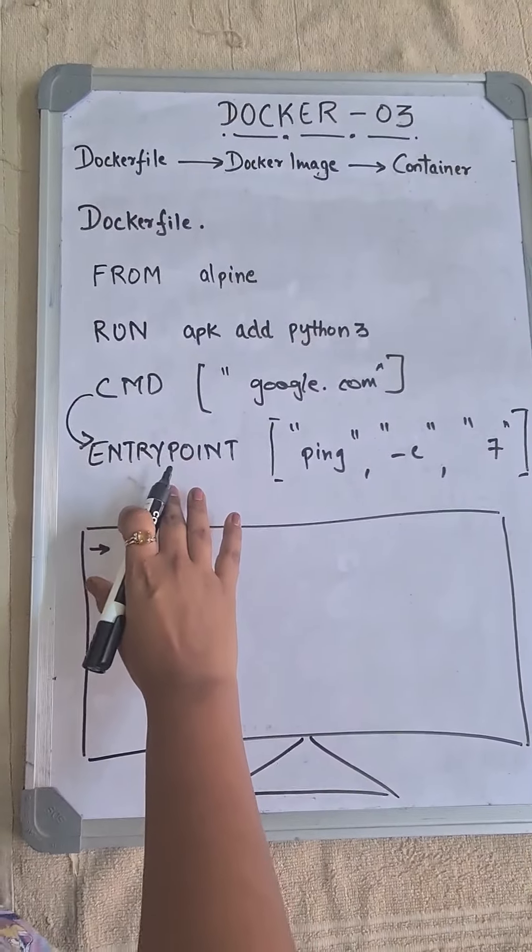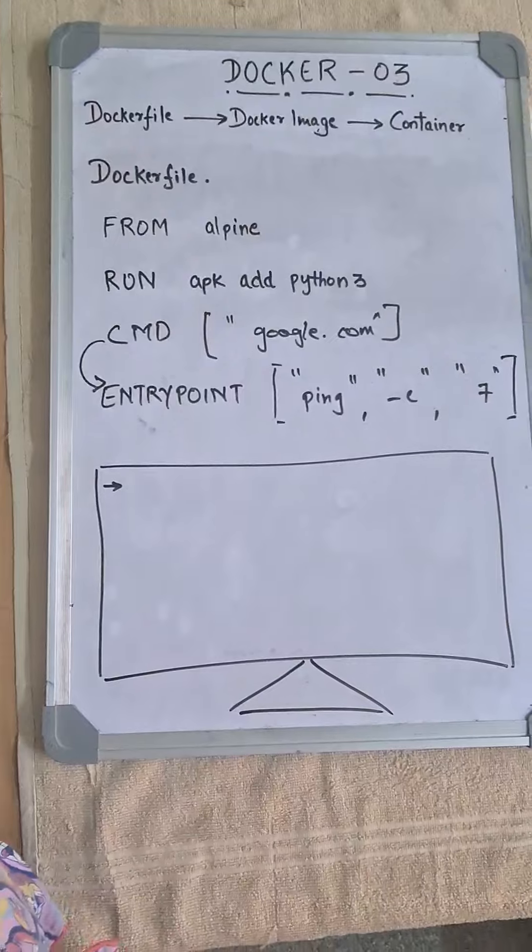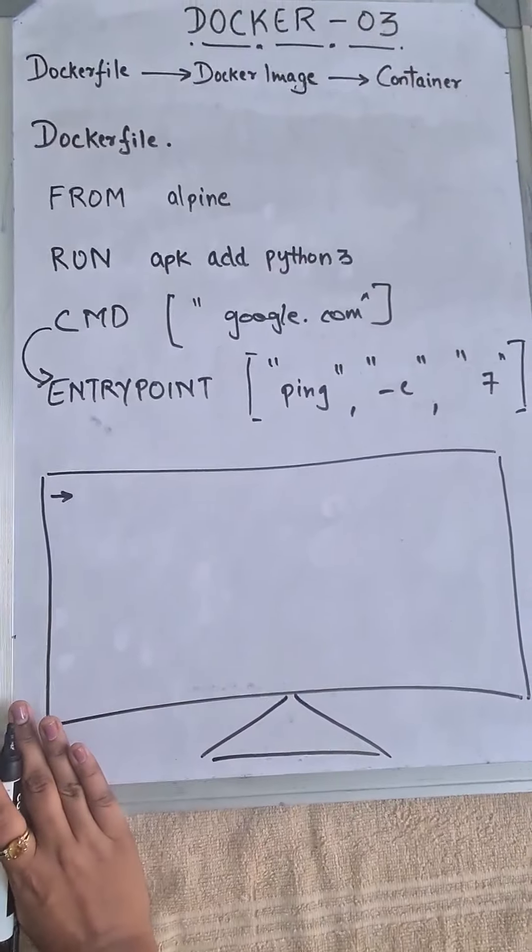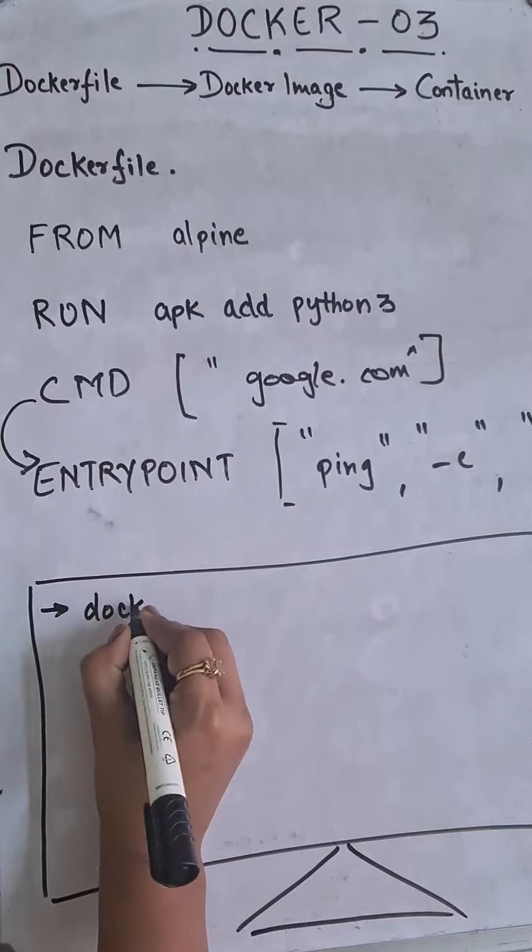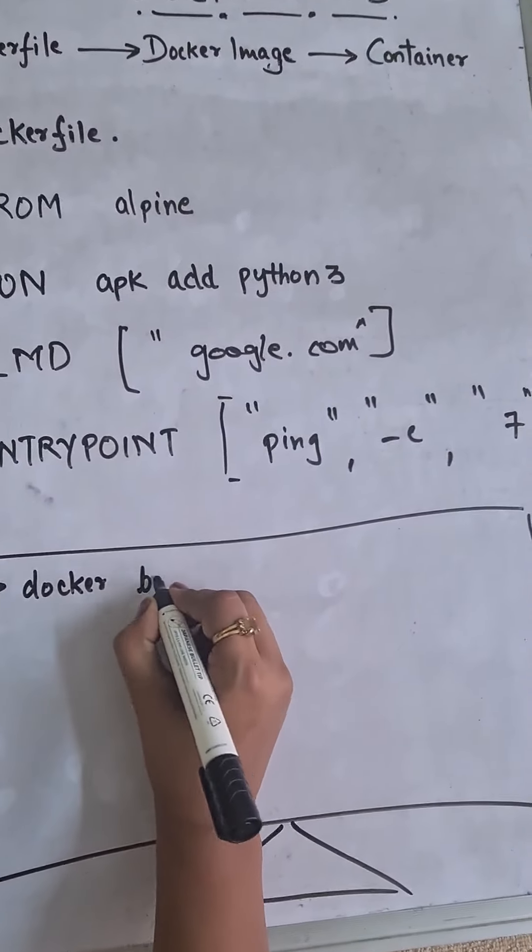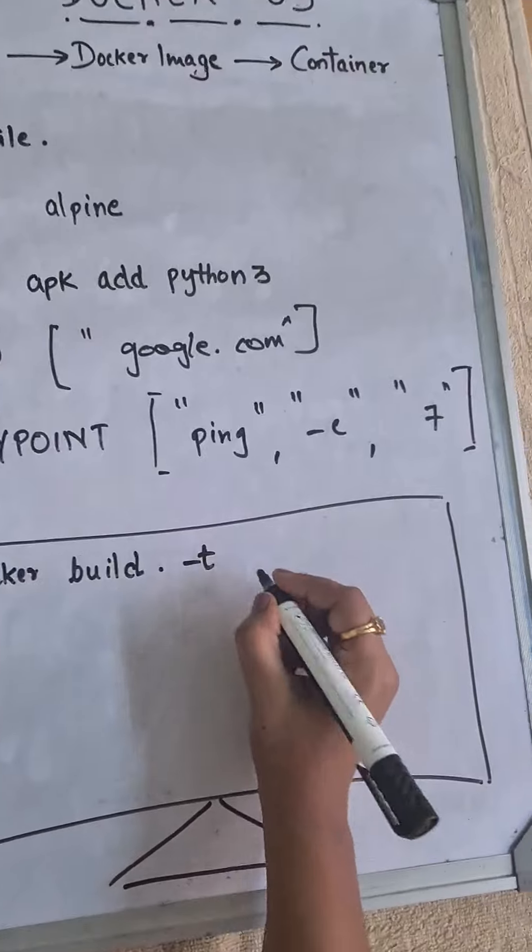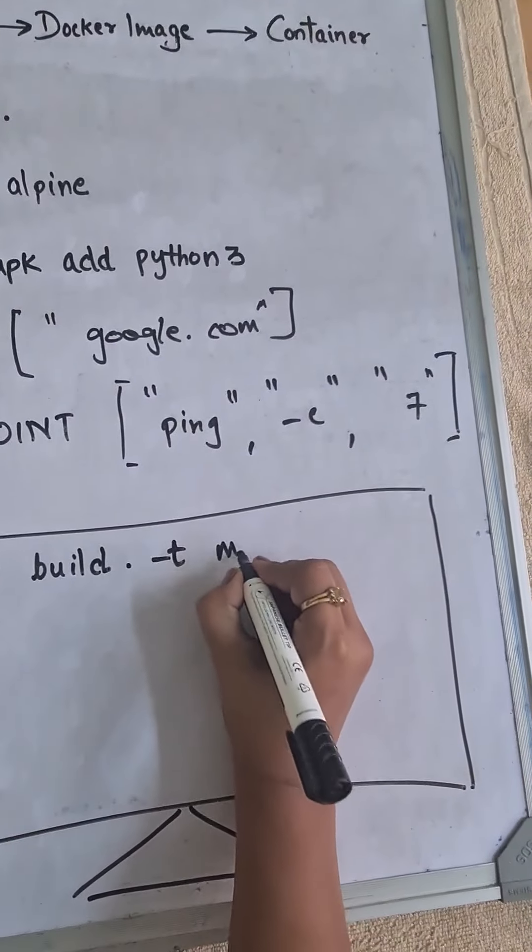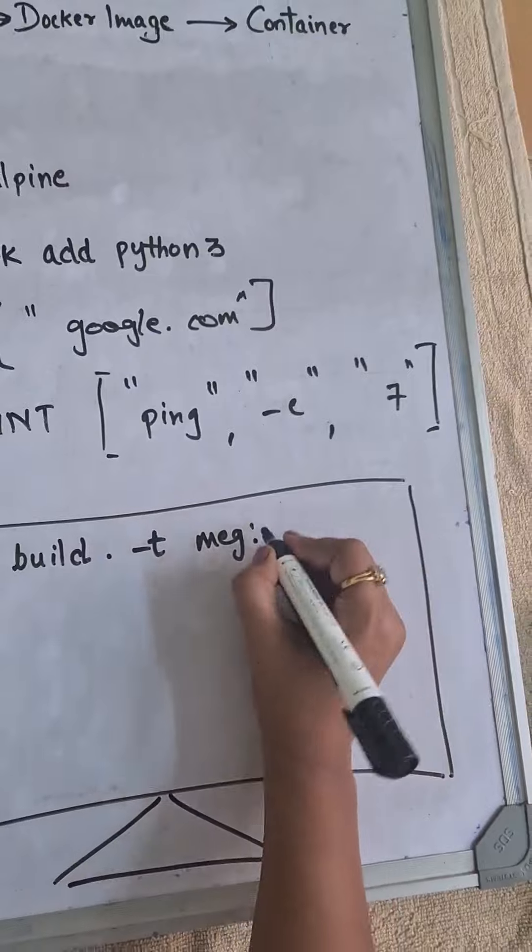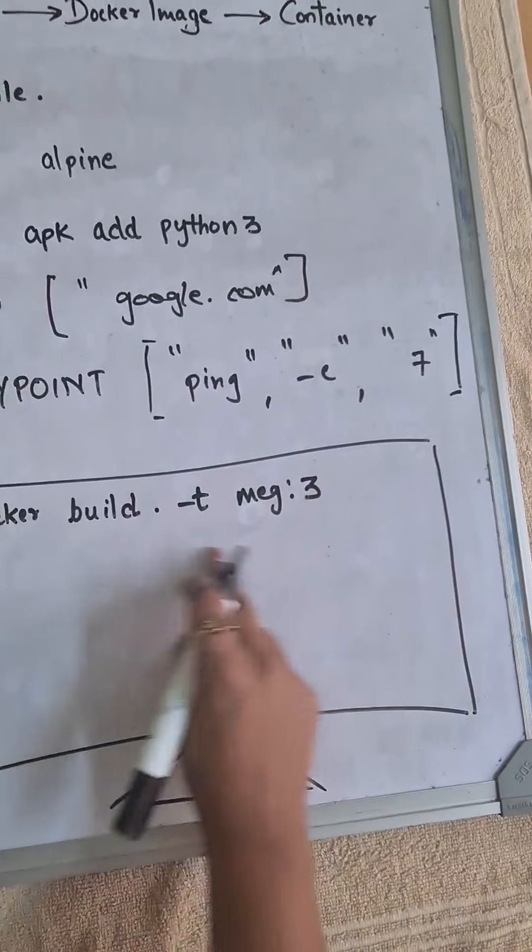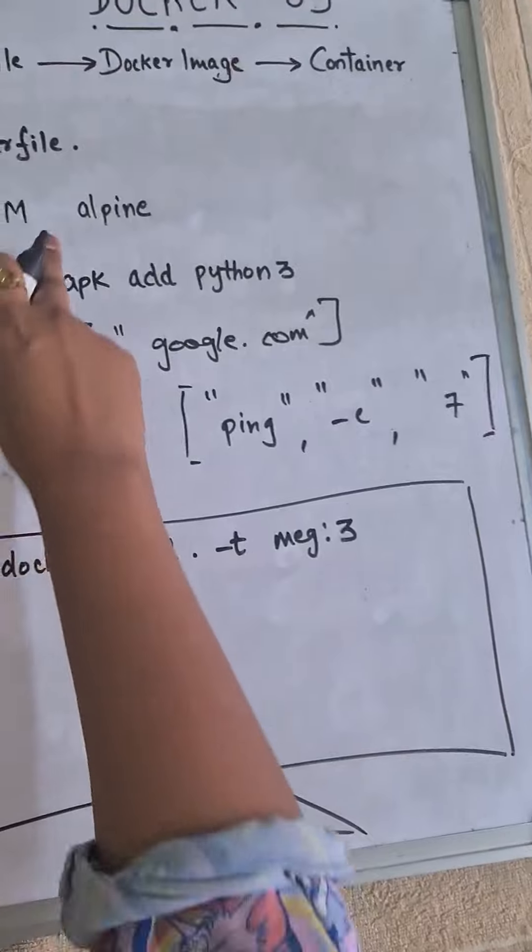So now that we have our Dockerfile ready, let us build the image and run the container out of it. So the first command to build the image is docker build . -t, and the name of the image is meg, and the version or tag that we are giving is 3. So this is actually going to build the image from our Dockerfile.